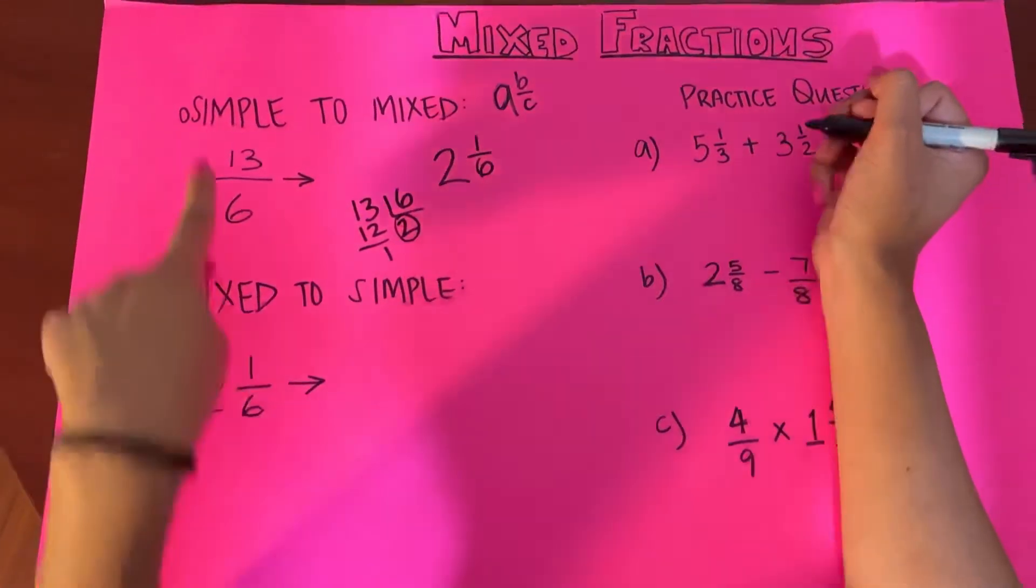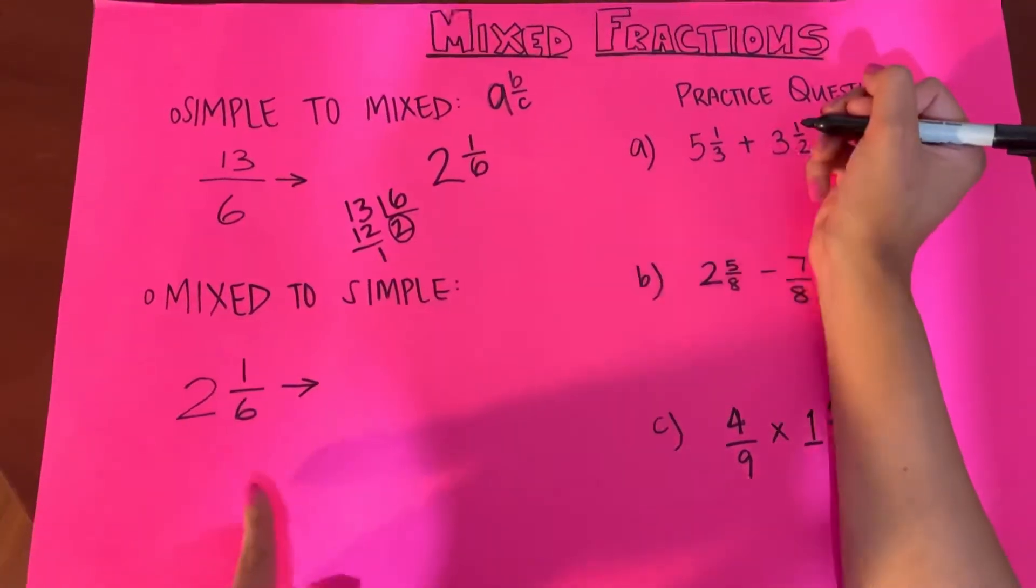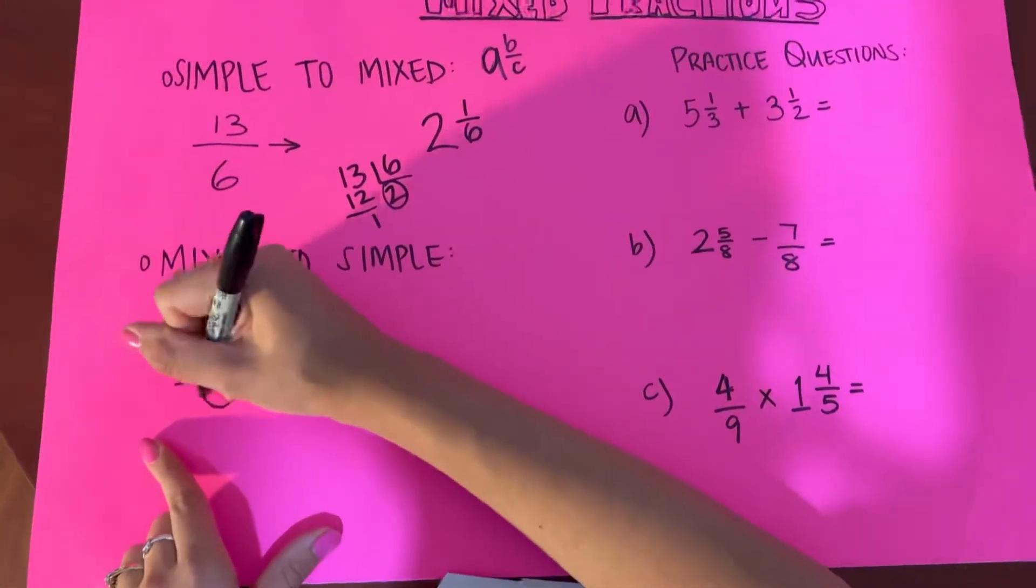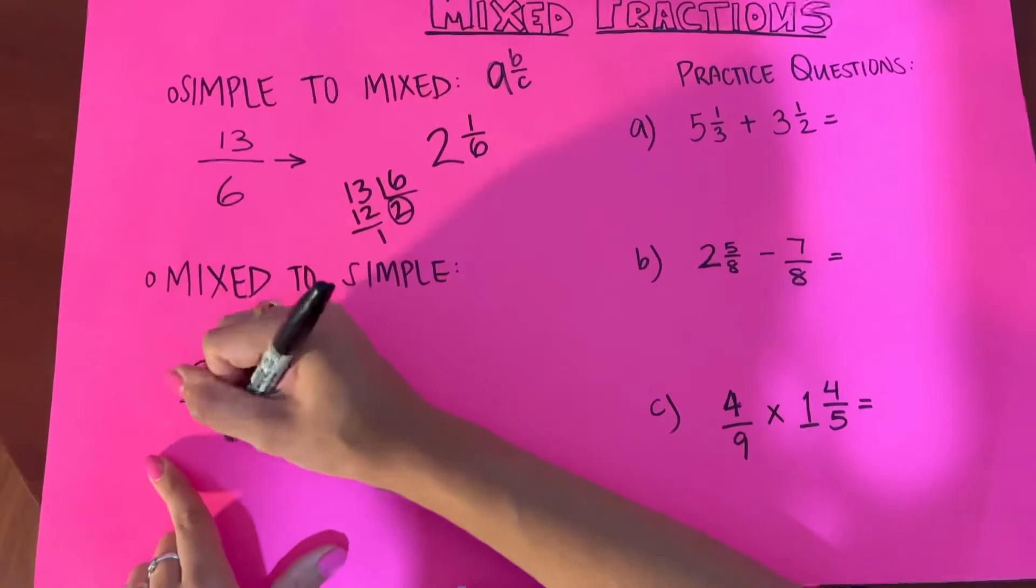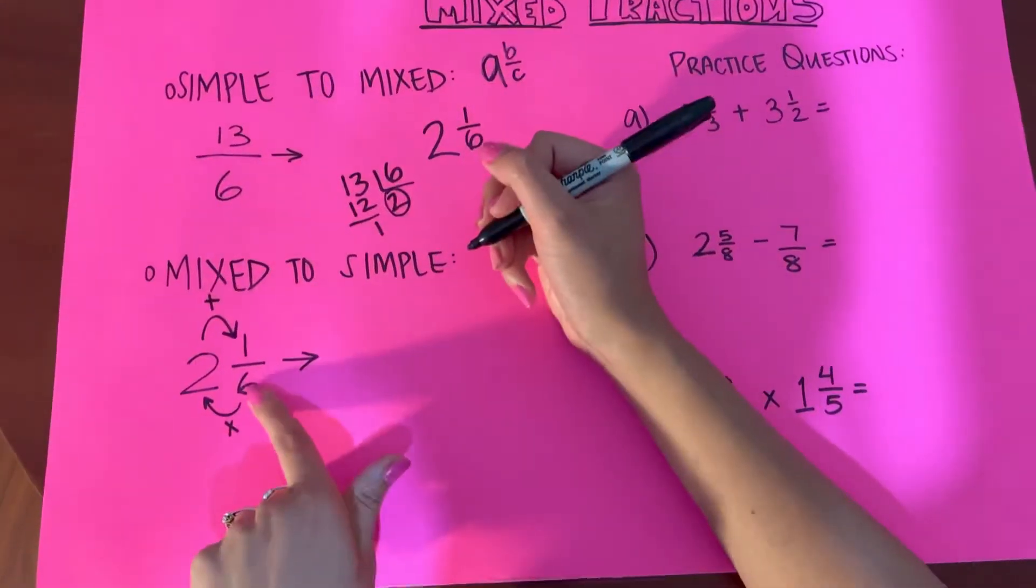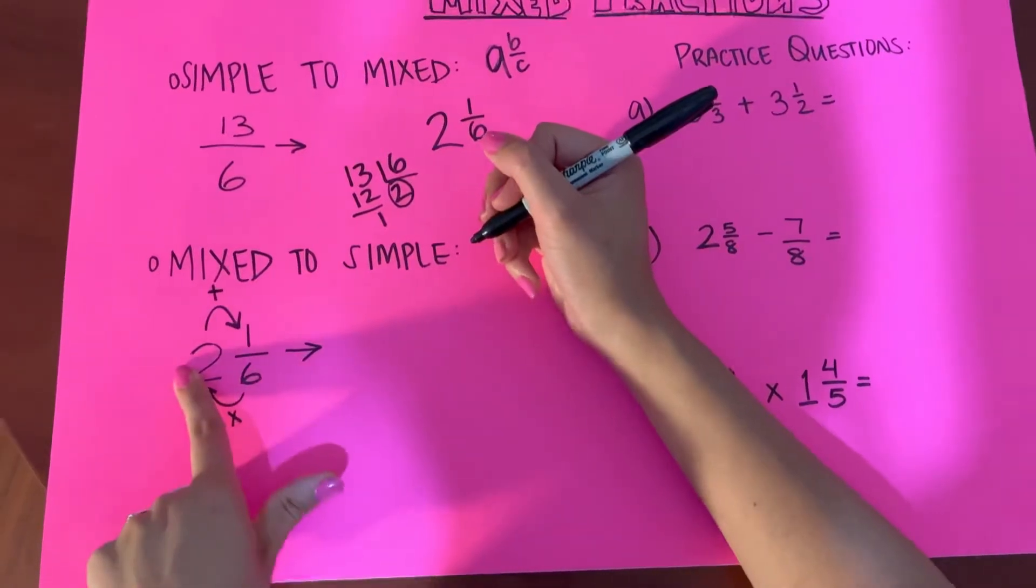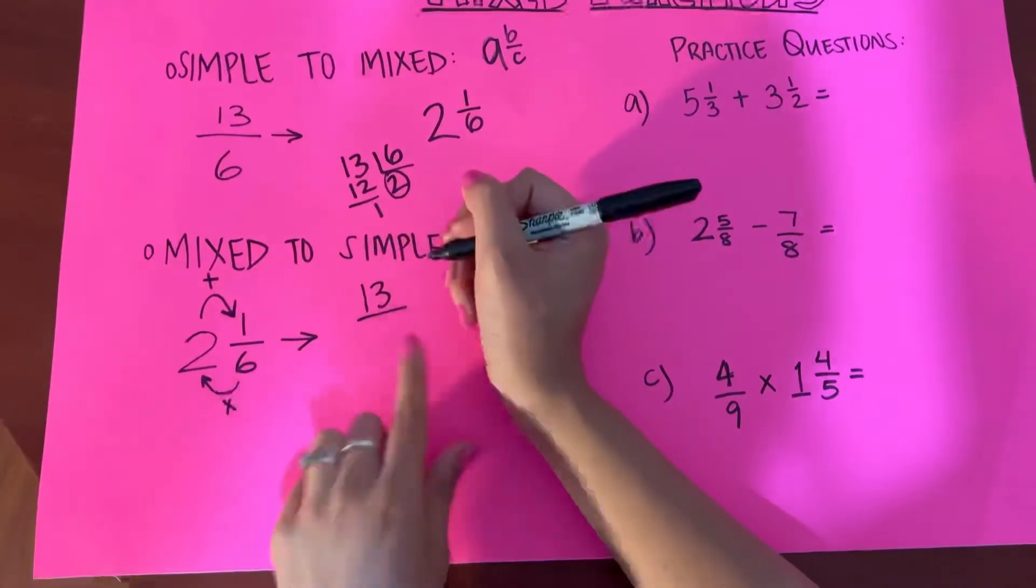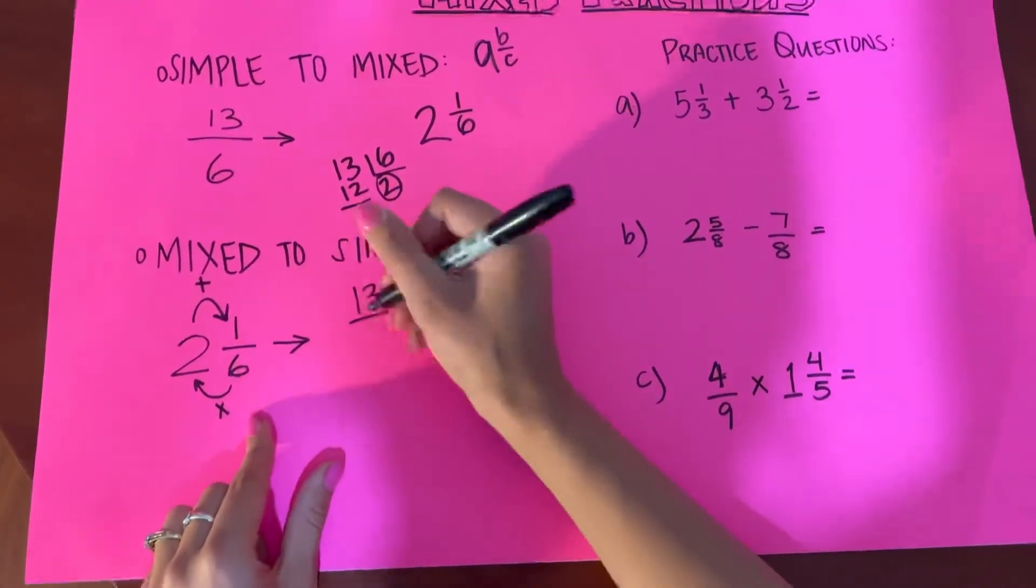Now to convert this into simple so you can check your answers, it's a very simple method called the circle method. You multiply here and you add here. So 6 multiplied by 2 is 12, 12 plus 1 is going to be 13, and the denominator again will be the same.